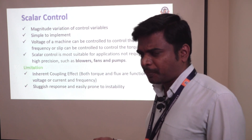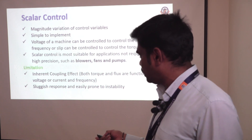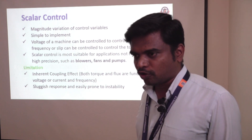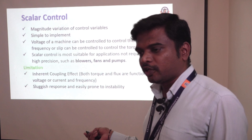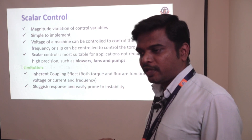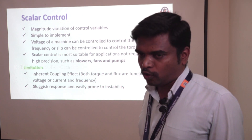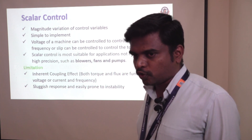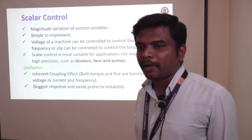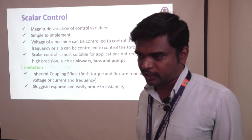In order to achieve precise speed control, we go with another type of control called vector control. The main problem with scalar control is that due to this recurrent coupling effect, it provides a sluggish speed response and can be easily prone to instability. It can only provide open loop speed control, suitable for low-end applications. However, the major advantage of scalar control is its simple implementation.